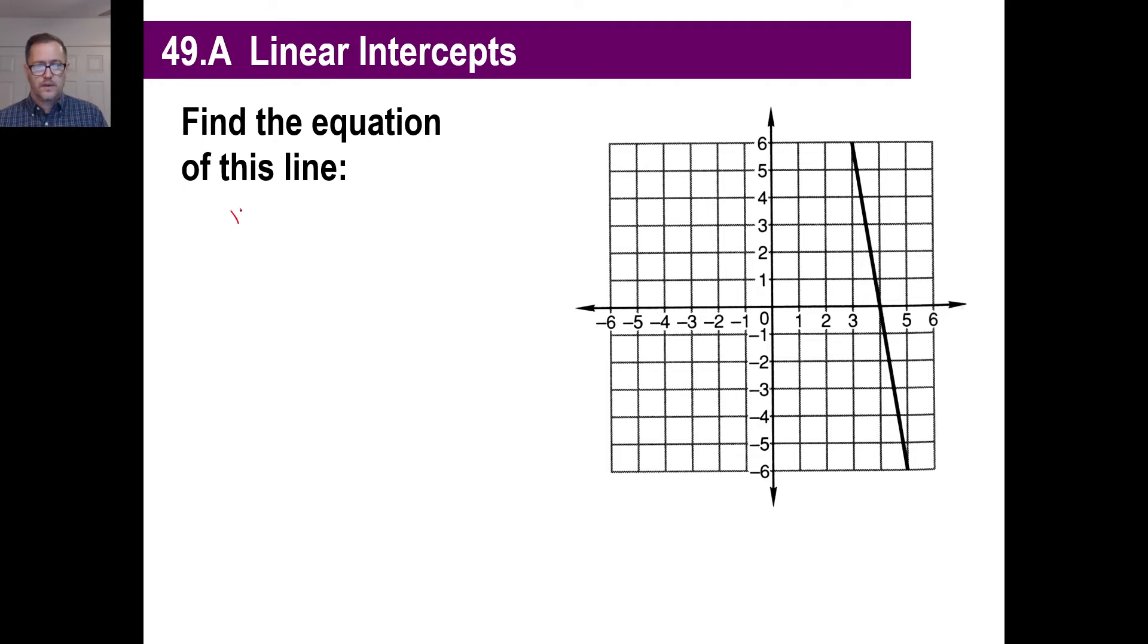First thing you want to do is y equals slope x plus y-intercept. All you need to do is you need to find out the slope, and you need to find out the y-intercept. Well, let's find the slope first. What about this slope is obvious since the line is pointing down? It's negative, right?